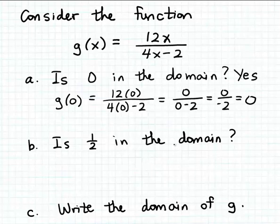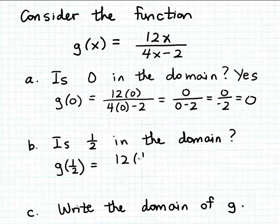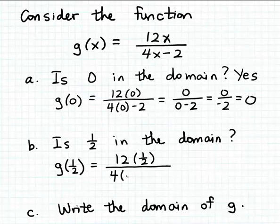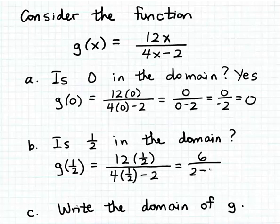On the other hand, let's check to see if the number one-half is in the domain. We go through exactly the same procedure — we simply use one-half as input to the function g and check to see if its matching output value is a real number. So I'm going to substitute one-half for the input variable x in the formula. We have 12 times one-half in the numerator, and in the denominator we'll have 4 times one-half minus 2. 12 times one-half is 6, so we end up with 6 in the numerator. 4 times one-half is 2, so in the denominator we end up with 2 minus 2, which is going to be 0.